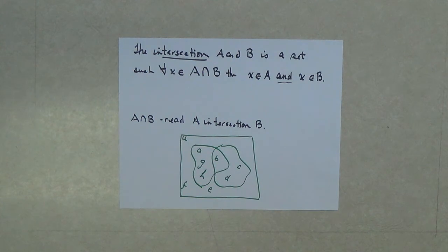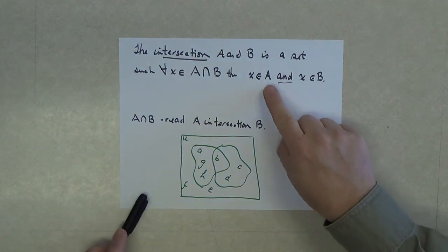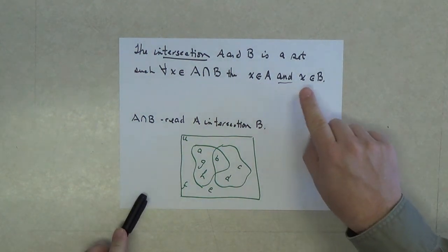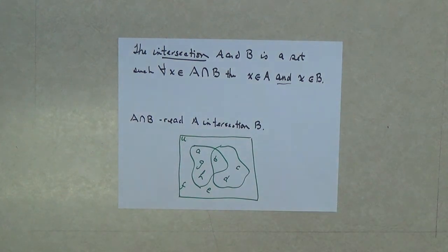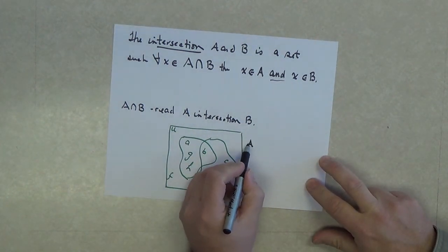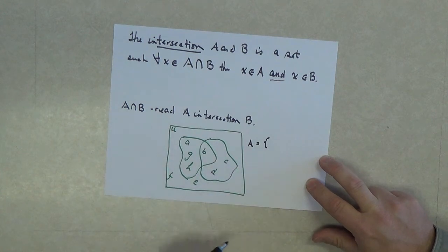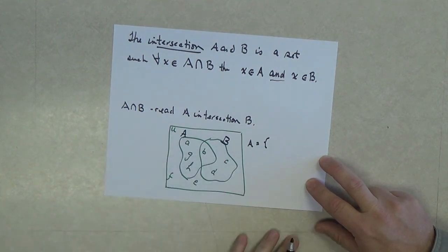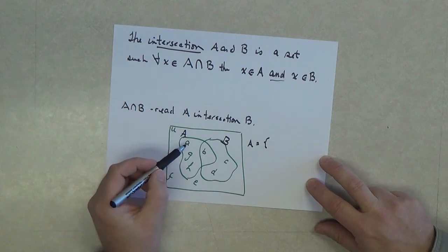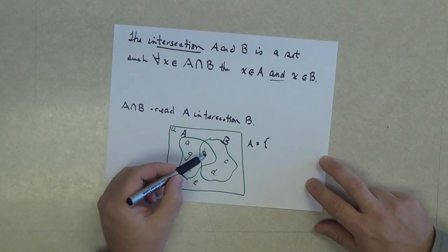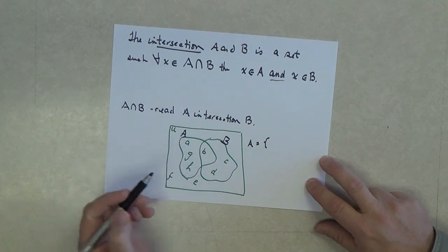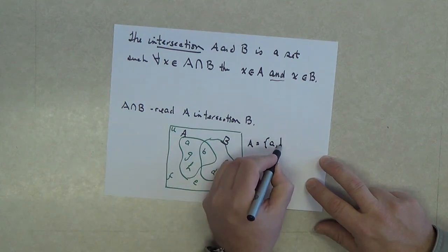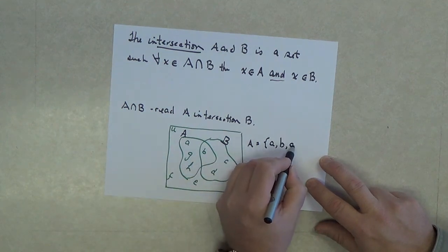If we were looking for all of the elements that belong to the intersection, it says they must belong to A and to B. Let's begin by listing what are the elements in A. If this is the set A and we call this set B, A contains the elements little a, little b, little g, little h.